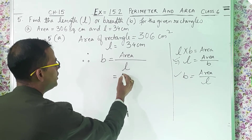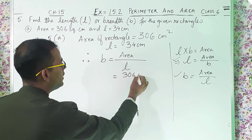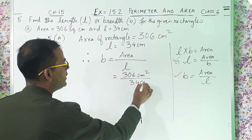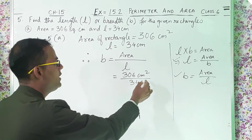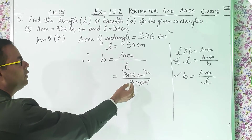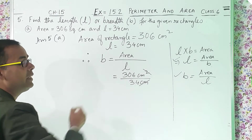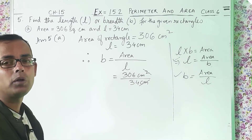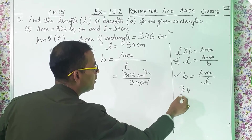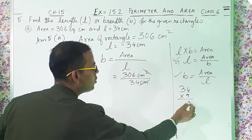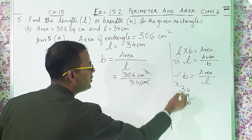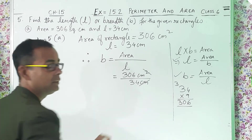We will put the values: 306 centimeter square divided by 34 centimeter. Centimeter and square cuts. Now we will divide: 306 divided by 34. 34 tens are 340. Let us see with 9 — 9 fours are 36, 9 threes are 27 plus 3 is 30. See, 306 is coming.